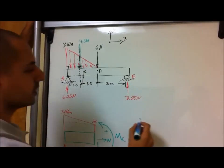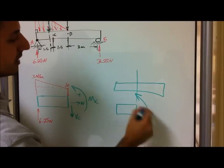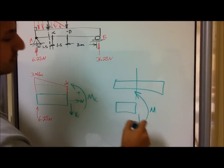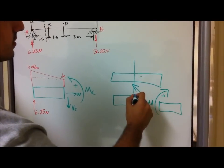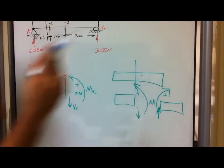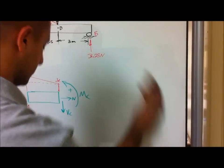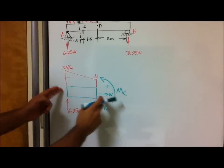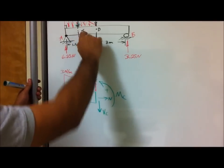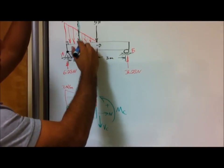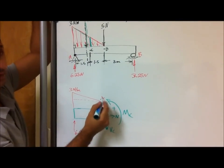Quick review: whenever you have a bar and you splice it in the middle, on the left half the moment acts counterclockwise and the shear points downward. On the right side, the moment acts clockwise and the shear points upward. At point C, we have the shear at point C pointing downward and the counterclockwise moment at C. However, we have a problem: at point C, we don't know the actual height of the distributed force.